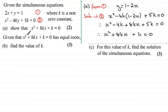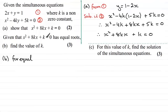For the next part, we're given that x squared plus 8kx plus k equals 0 has equal roots, and we've got to find the value of k. For equal roots, if we take our equation as having the form ax squared plus bx plus c equals 0, then b squared minus 4ac should equal 0.